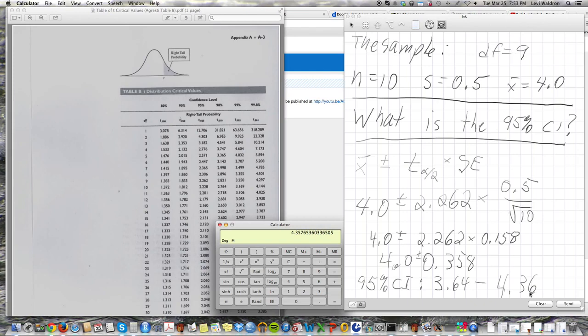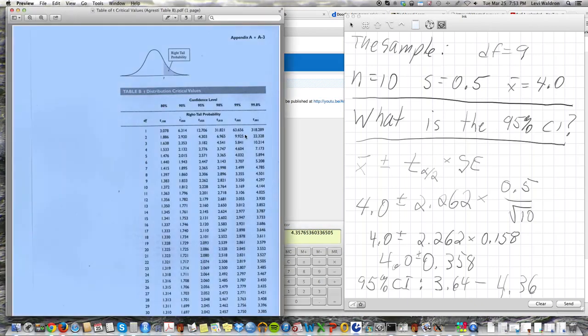And that's all there is to it to get a 95% confidence interval from a sample using the t-table. Note, if we wanted a 99% confidence interval, we would have used this column instead. So we would have used 3.25 instead of 2.262. And that's all. So, thank you very much.